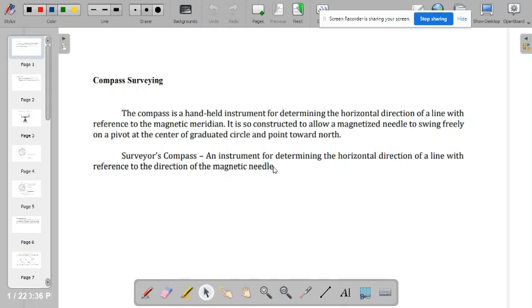I am going to discuss today about compass surveying. The compass is a handheld instrument for determining the horizontal direction of a line with reference to a magnetic meridian. It is so constructed to allow magnetized needles to swing freely on a pivot at the center of graduated circle and point towards the north. A surveyor's compass is an instrument for determining the horizontal direction of a line with reference to the direction of the magnetic needle.